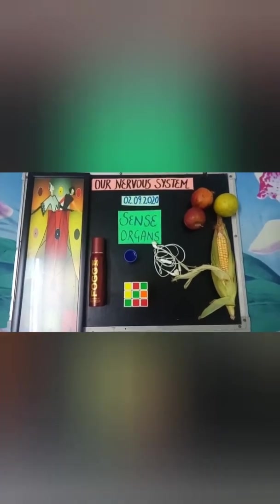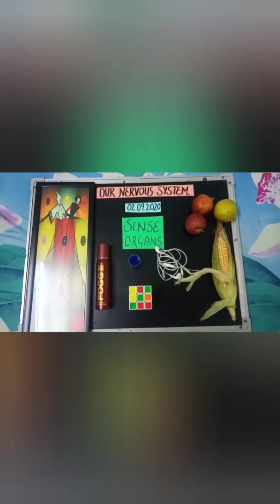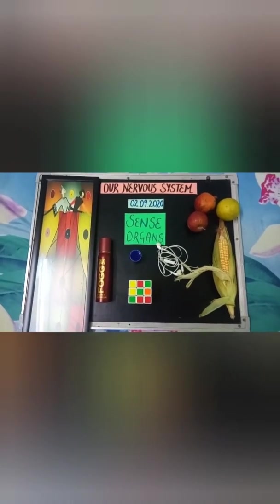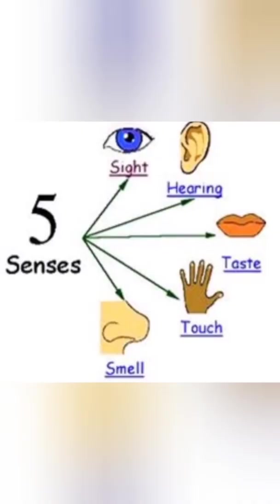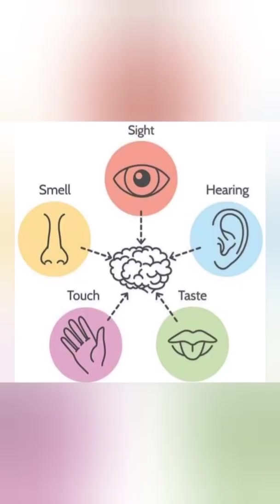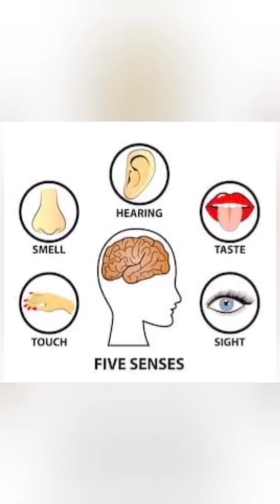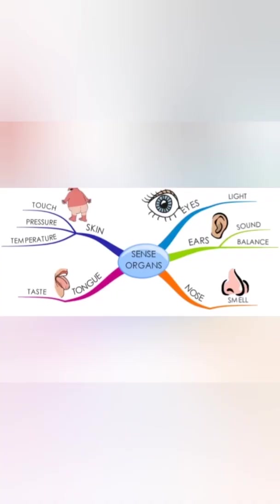Sense organs is our today's topic — the last video of chapter five: our nervous system. Sense organs play an important role in a variety of functions and help in perceiving our surroundings. They are an integral part of our bodies that enable us to sense the environment. In total, we have five sense organs, also called the five primary sensory organs: ears, eyes, nose, tongue, and skin.